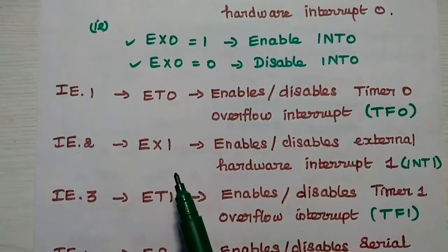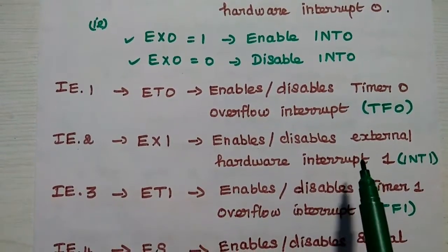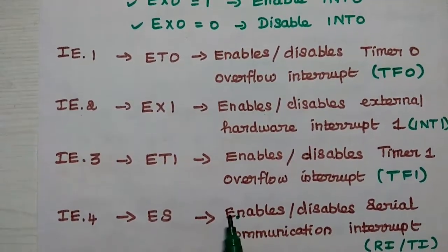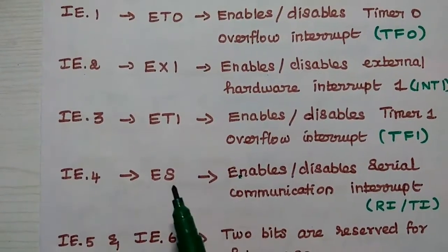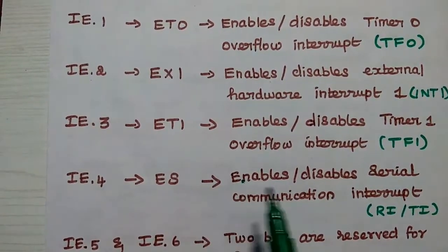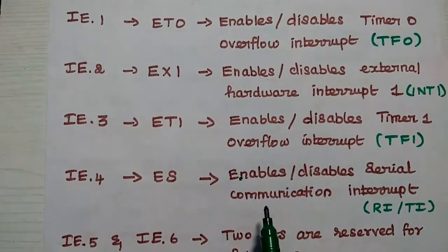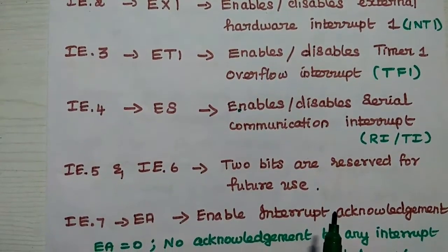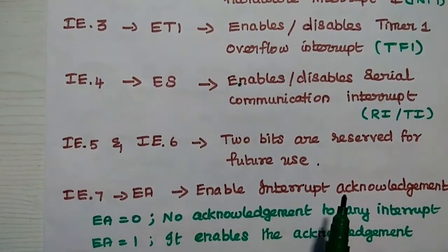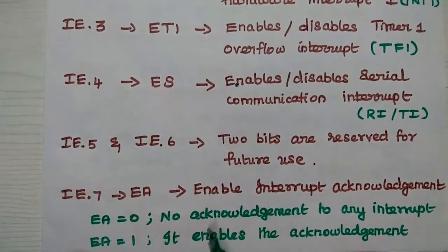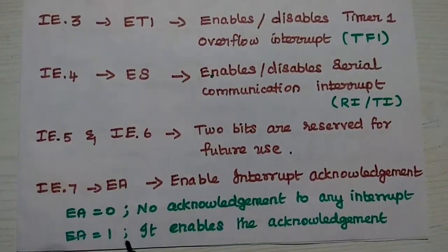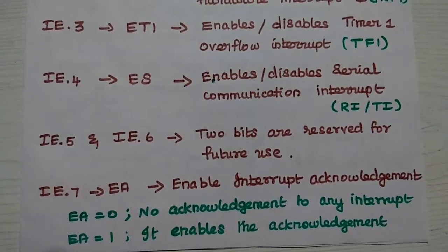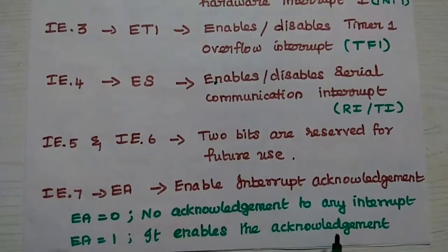Similarly, the next bit EX1 is used to enable or disable external hardware interrupt 1. ET1 is used to enable or disable timer 1 overflow interrupt. ES is used to enable or disable the serial communication interrupt. The two bits after ES are reserved for future use. The last MSB bit, IE.7, is denoted as EA. If EA equals 0, there is no acknowledgement to any interrupt. If EA equals 1, it enables acknowledgement to any interrupt request.